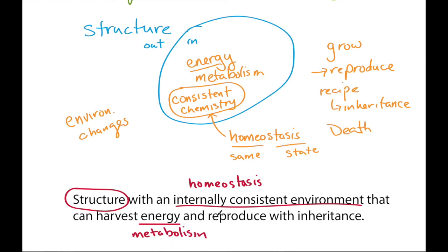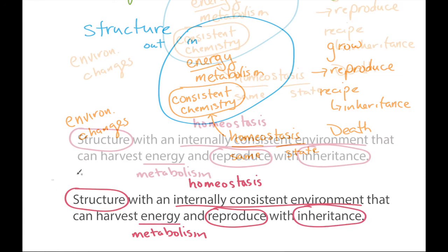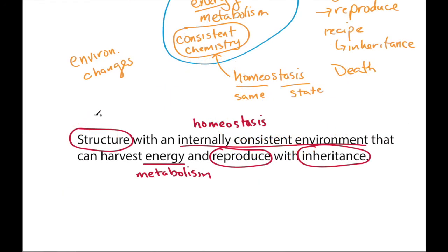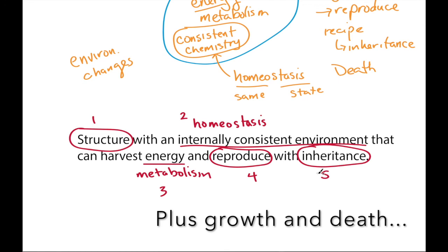And the reproduction and the inheritance are words that people normally use. So what we have is five properties. Structure, homeostasis, metabolism, reproduction, and inheritance. And those are what makes something alive. Alright, thanks so much.